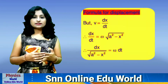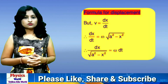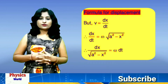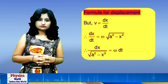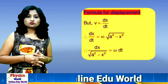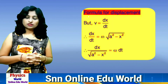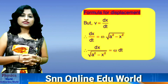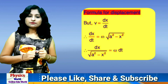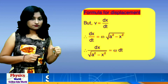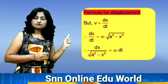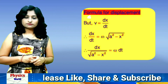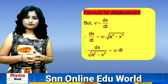Now we move towards the next concept — the displacement of the particle in simple harmonic motion. For this we use the velocity equation. We know that V = dx/dt. So velocity, according to definition, is the rate of change of displacement: dx/dt = ω√(A² - x²).